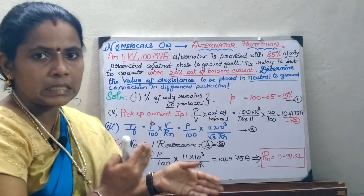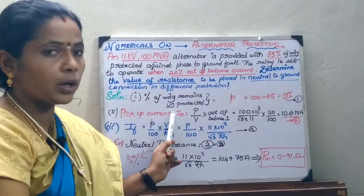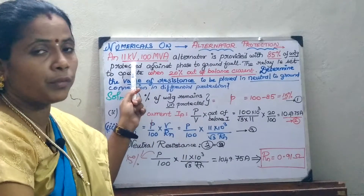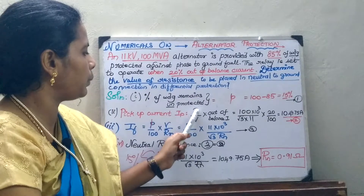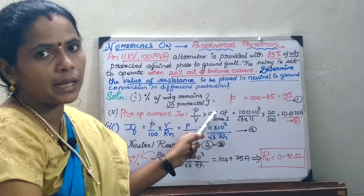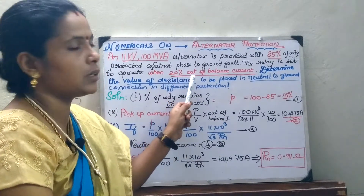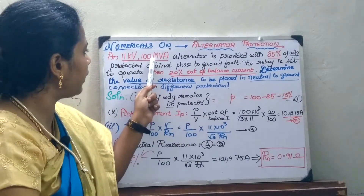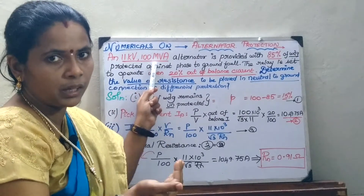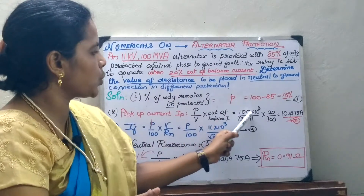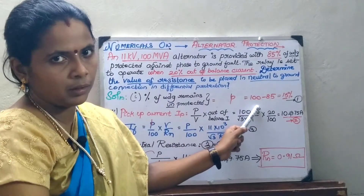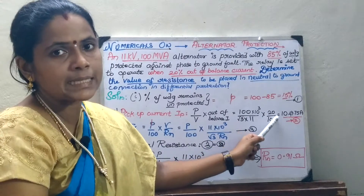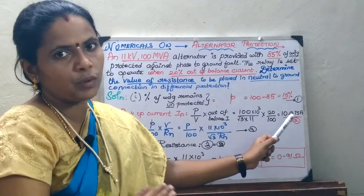The second step is to find out the pickup or threshold current. The CT ratio is not given here as in the previous problem, but the ratings of the alternator are given, so we can compute. It is I = P/V, multiplied by the out-of-balance current, because when it goes 20 percentage out of balance the relay operates. Here it is 100 MVA and 11 kV, so multiplying by 10³ to keep consistent units: 100 MVA divided by 11 kV into the out-of-balance current of 20 percentage yields a value of 1049.75 amps — that is the pickup value.